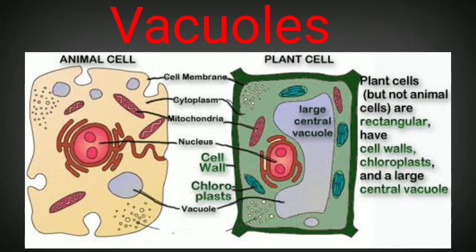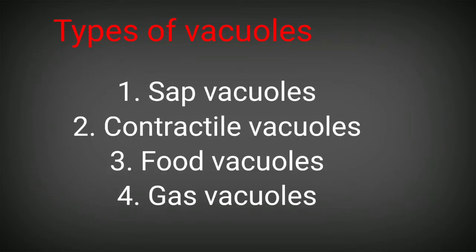Vacuoles are small in case of animals, and large in case of fungal and plant cells. They are filled by a fluid called cell sap. Vacuoles can be of many types. Some act as sap vacuoles, where they contain the cell sap - these are the common vacuoles.